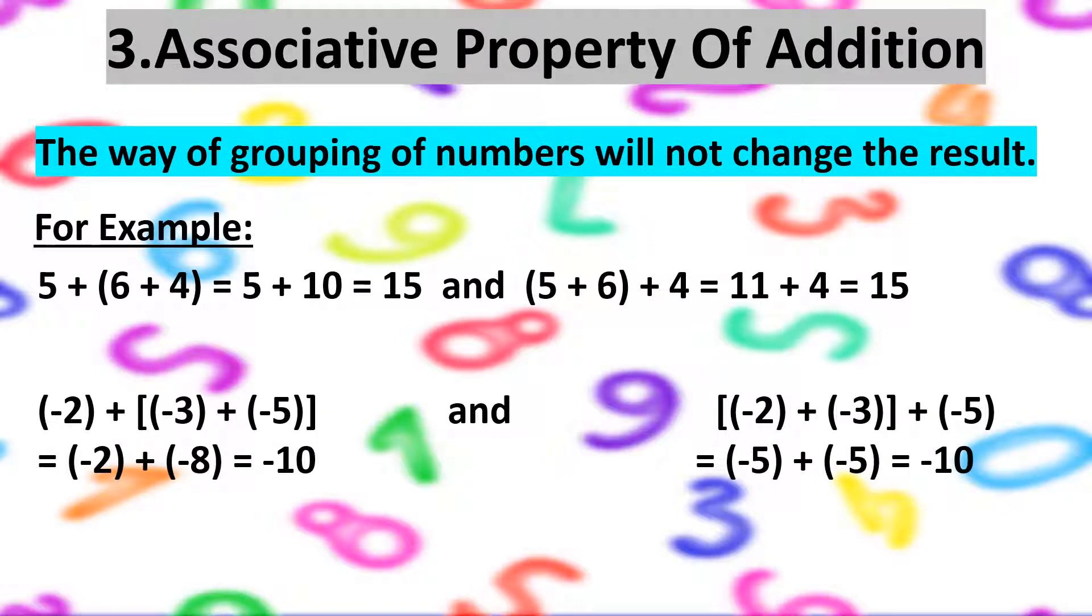Let us take another example. To add numbers minus 2, minus 3 and minus 5, I first grouped minus 3 and minus 5 and tried to solve the equation, where I got the result as minus 10. Same equation, I tried to solve by grouping different numbers this time, minus 2 and minus 3, and I got the same result as minus 10.